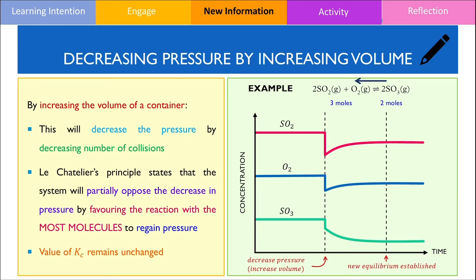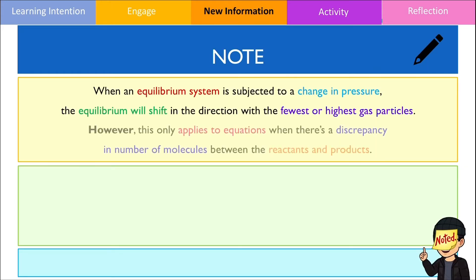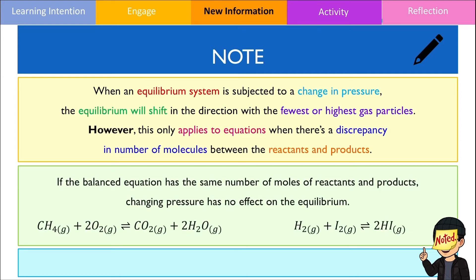We have now looked at several examples of how changing volume disrupts equilibrium and have seen how the system responds to partially oppose this change. However, the system will only change response if there is a discrepancy or difference in the number of molecules between the reactants and products. This means that if the total number of gas molecules in the reactants is the same as for the products, changing the volume of a gaseous mixture will have no effect on the equilibrium.